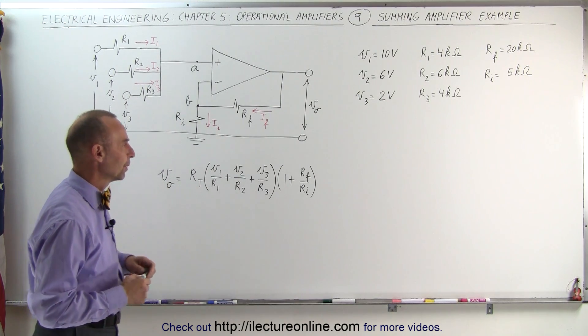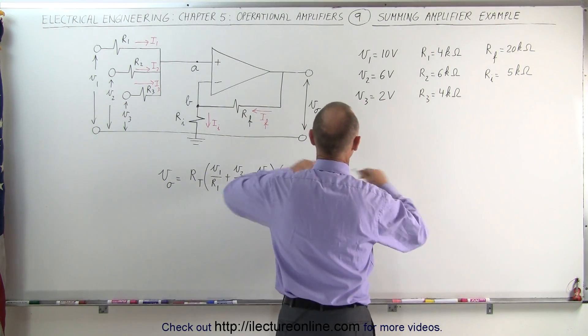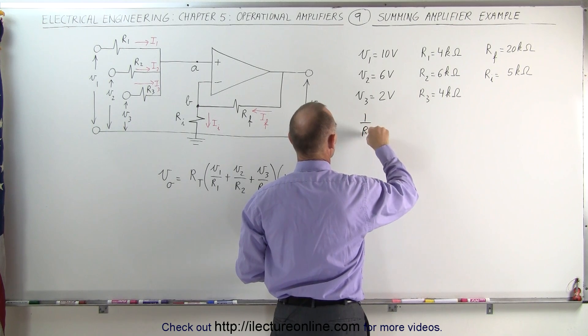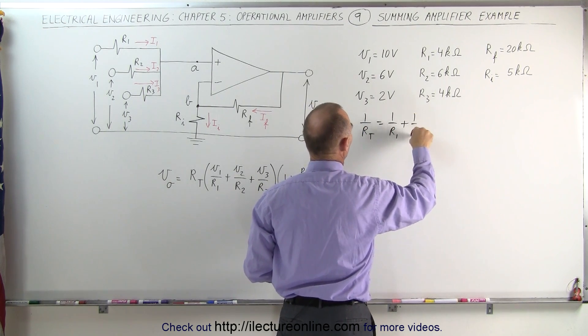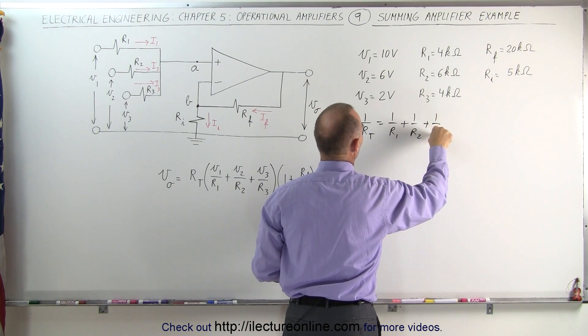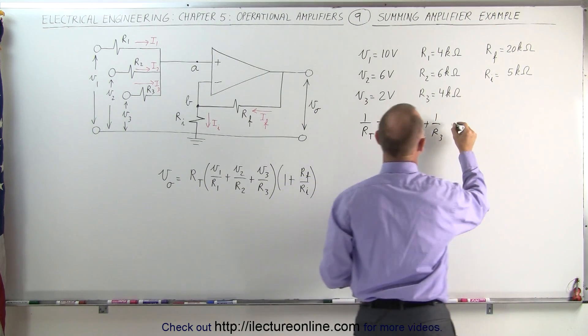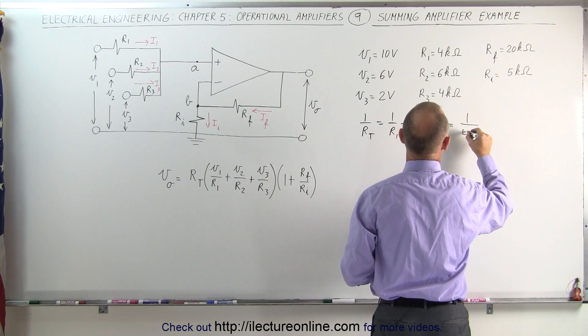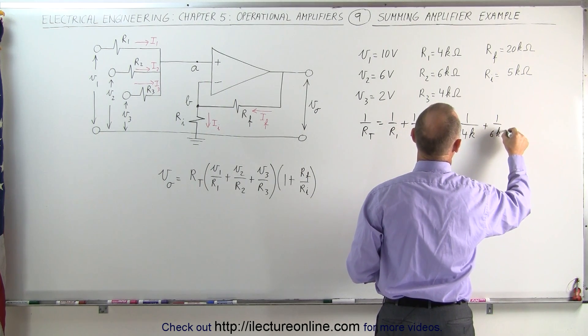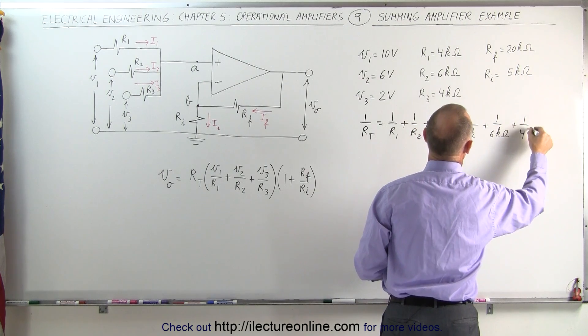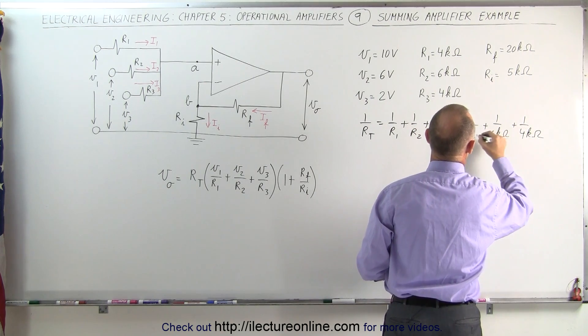First of all, r total. Remember that 1 over r total was equal to 1 over r1 plus 1 over r2 plus 1 over r3. So in this case, that would be equal to 1 over 4k ohms plus 1 over 6k ohms plus 1 over 4k ohms.